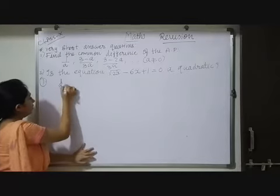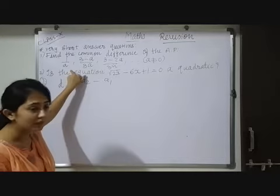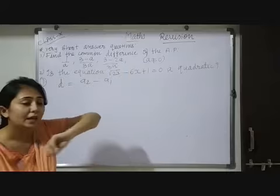Children, we know that common difference D equals A2 minus A1. First term we are considering as A1, second A2, third A3, up to An.